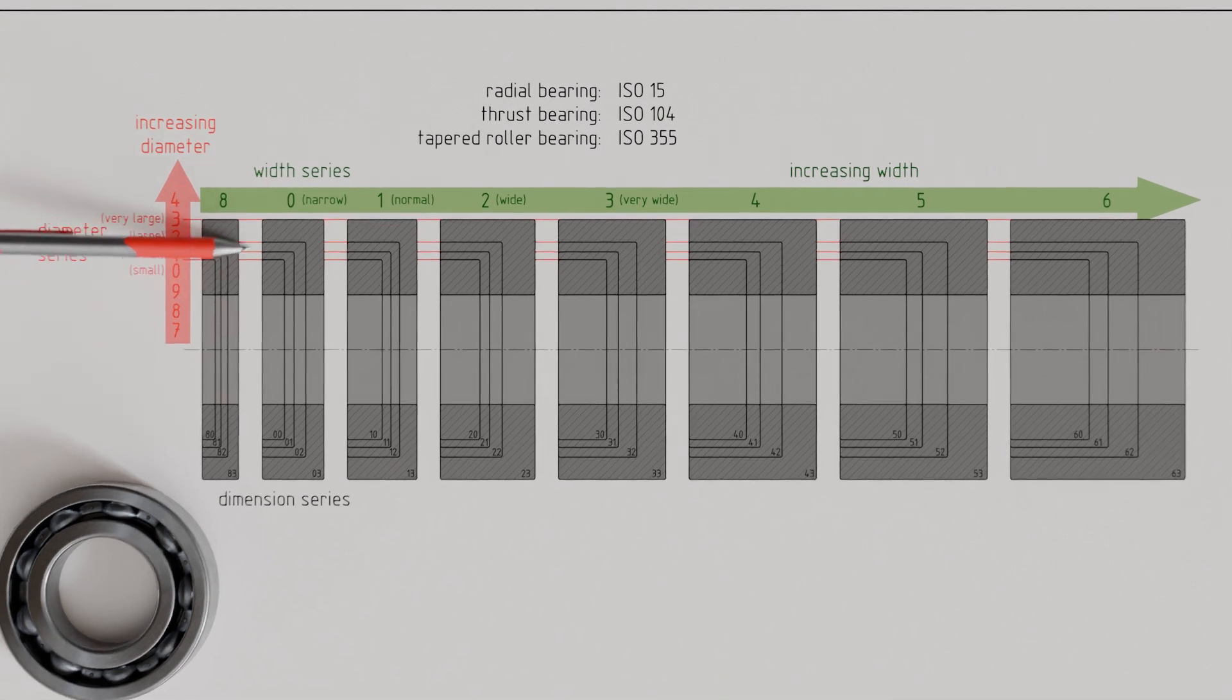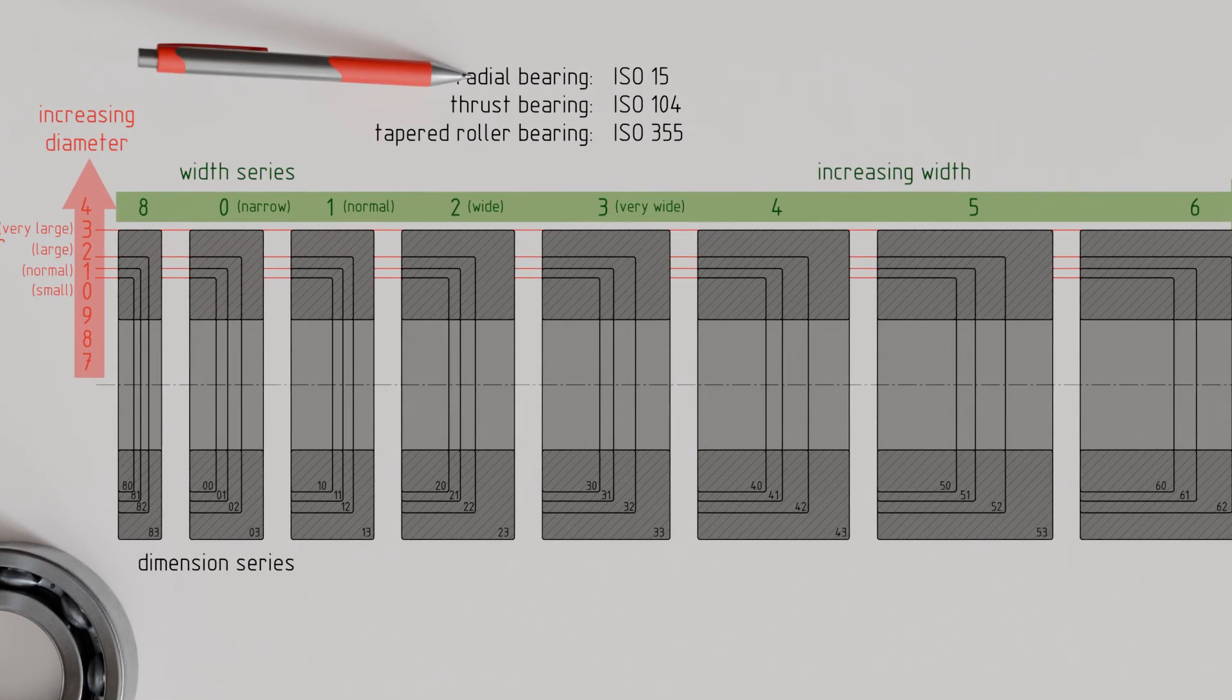In contrast, for thrust bearings, the standard ISO 104 uses a height series instead of the width series, which is marked with the numbers 7, 9, 1, and 2.